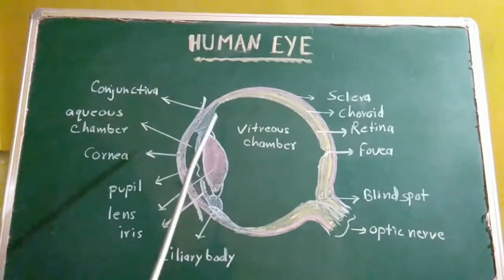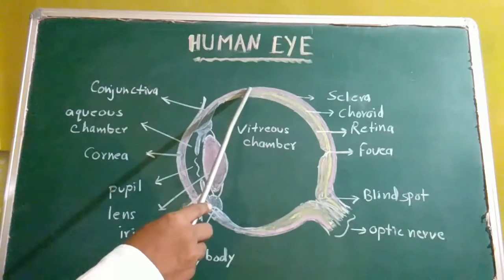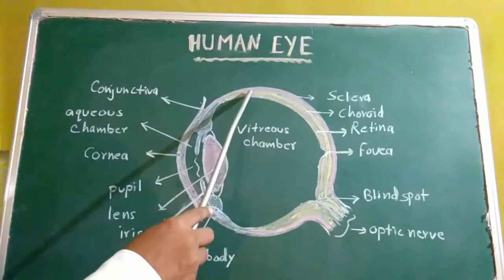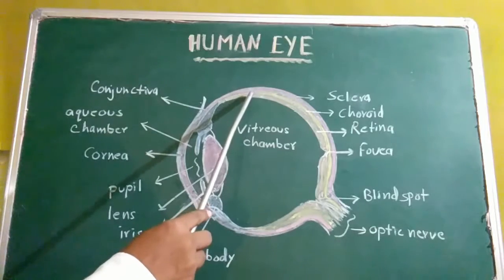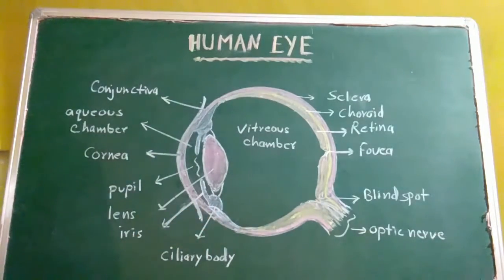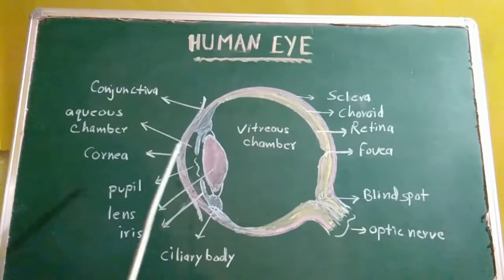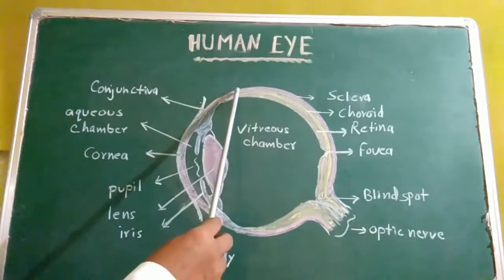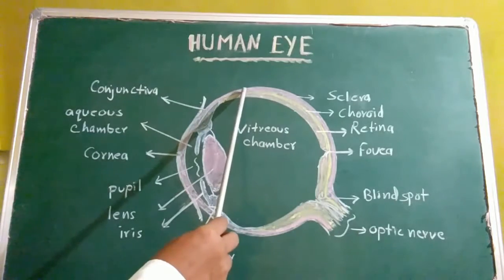Eyeball is made up of 3 layers: outer fibrous coat or corneoscleral coat, middle vascular coat, and inner nervous coat also known as the retina. Now one by one we will study about the different layers. First layer is the outer fibrous coat.